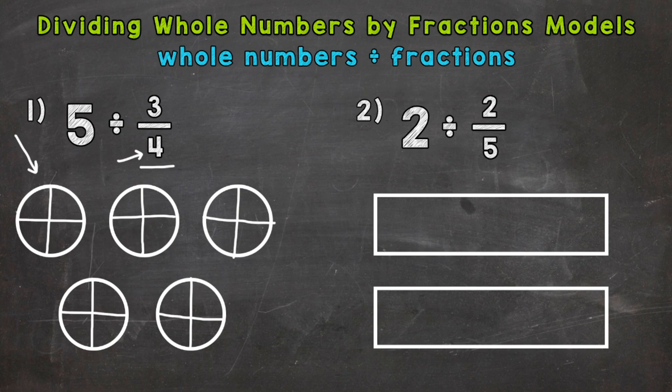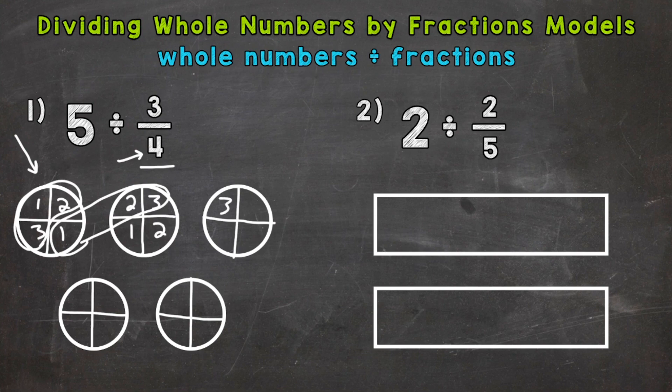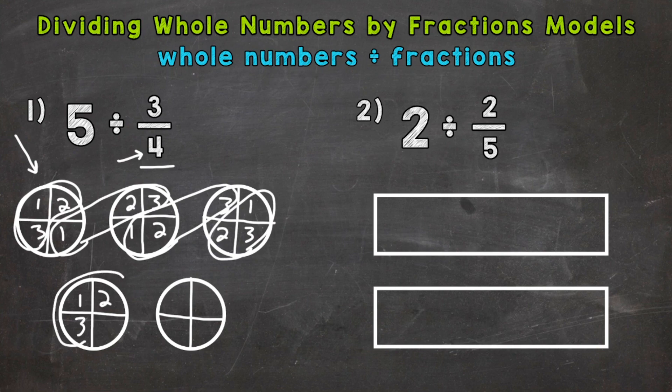So once we do that, we need to see how many groups of 3 fourths are within those 5 wholes. And we can count off like this in order to do it. So 1 fourth, 2 fourths, 3 fourths. That's one whole group of 3 fourths. 1, 2, 3 fourths. There's another group. We continue counting: 1, 2, 3 fourths. 1, 2, 3 fourths. 1, 2, 3 fourths. Almost done here. 1, 2, 3 fourths.